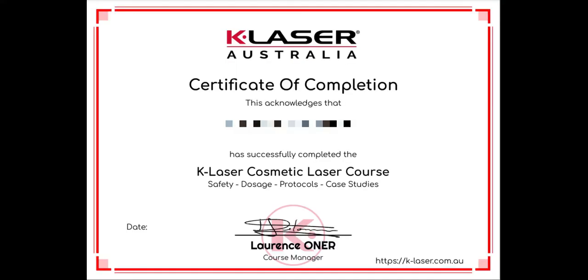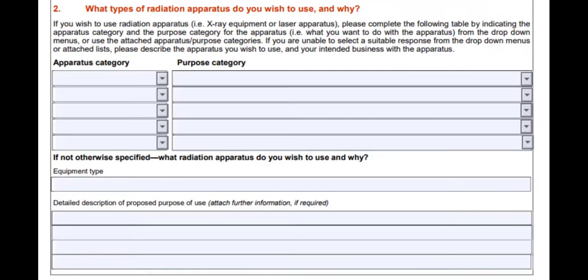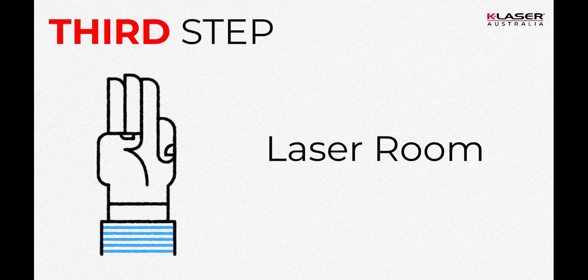For a faster licensing process, K-Laser Australia offers a free laser safety course to medical practitioners. This course is already known to the Queensland Radiation Health Department. At this stage, you can now apply for a user license. Don't forget to certify all the required documents by a justice of the peace and send your application. The average waiting time to receive an answer is 5 to 8 weeks. Meanwhile, you can prepare the next steps.